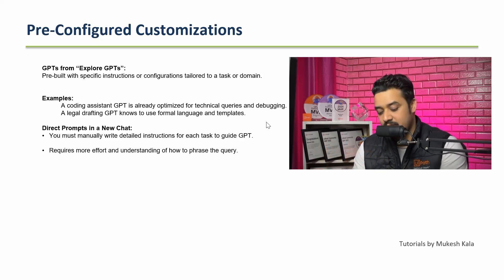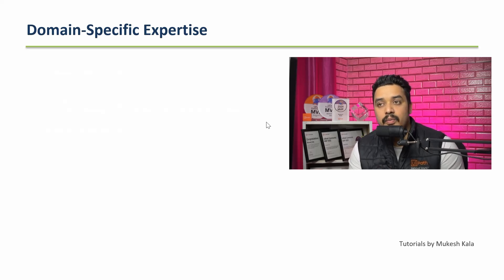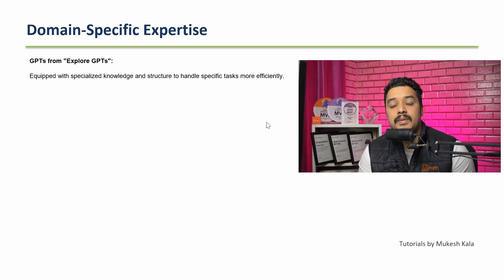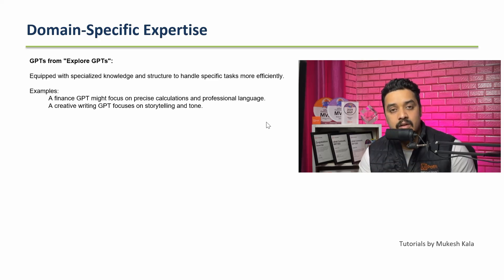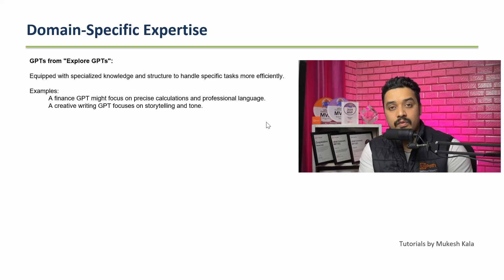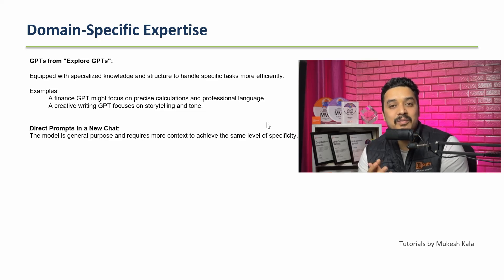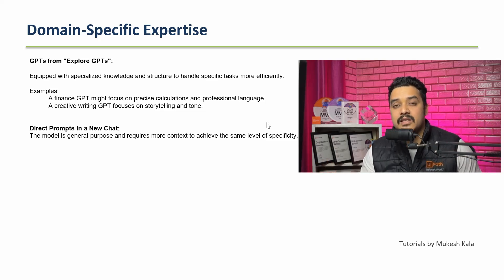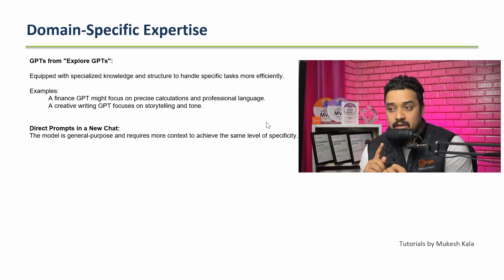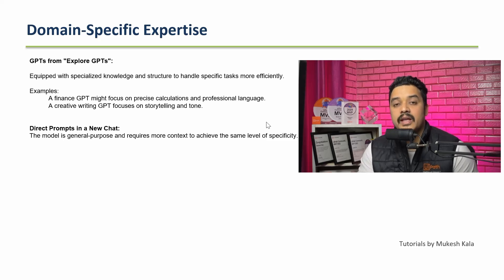The first key parameter is domain-specific expertise. GPTs are available that are equipped with specialized knowledge to handle specific tasks more efficiently. For example, a finance GPT focuses on precise calculations, whereas a creative GPT is trained to produce more creative output. The general-purpose model like GPT-4o is for broad use, but these are specifically built for a domain.